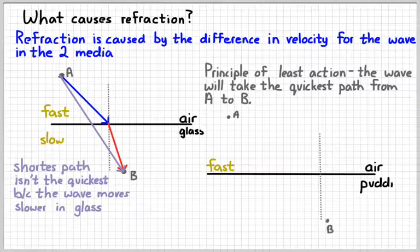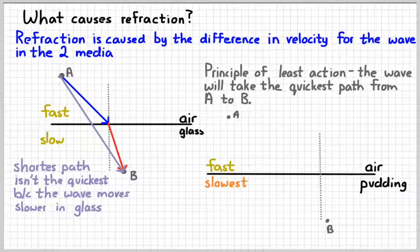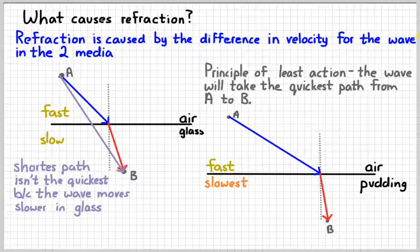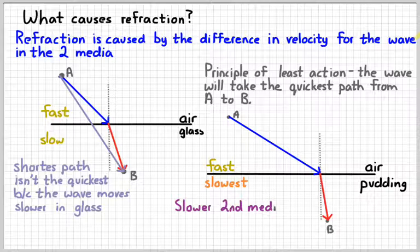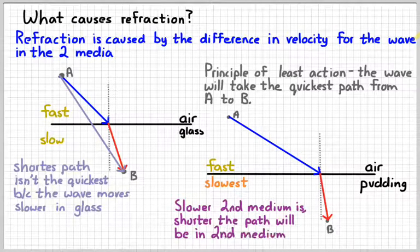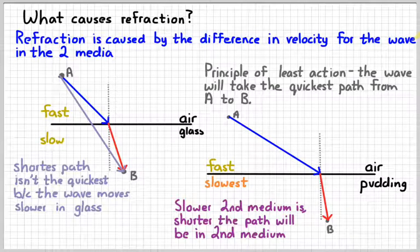If we have something that is even slower, like pudding, the effect will be even more noticeable. So the slower the new medium is, the more bending there's going to be, just because the light wave will go through the quicker medium, the longer path, so we can take the shortest path through the slower medium. So the slower the second medium is, the shorter the path will be in the second medium, which means the smaller the angle relative to the normal will be.